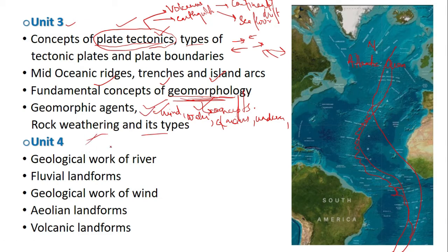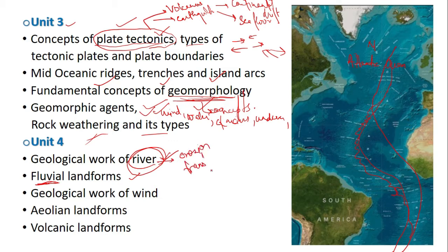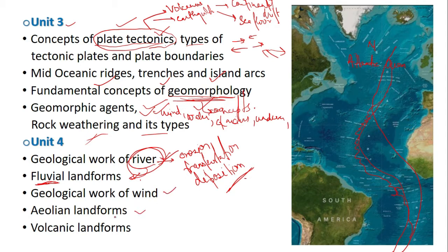In unit four we'll be learning about the geological work of river as a geomorphic agent, and fluvial landforms — landforms created by the geological work of river through erosion, transportation, and deposition. Then we have the geological work of wind and aeolian landforms, which are landforms formed by the erosion, transportation, and deposition work of wind.